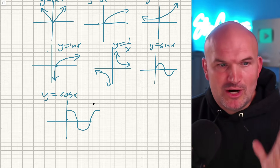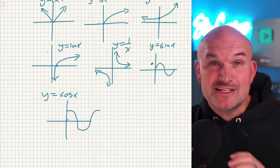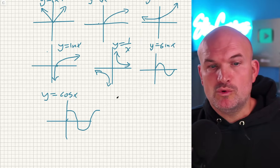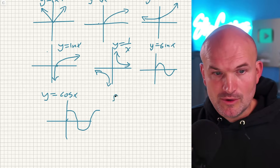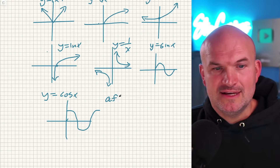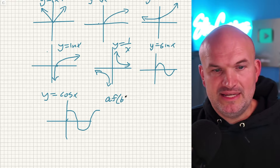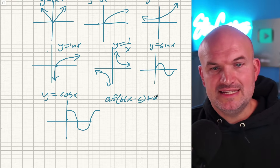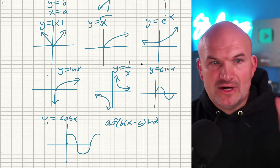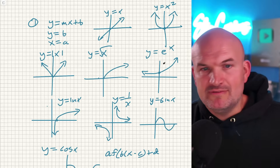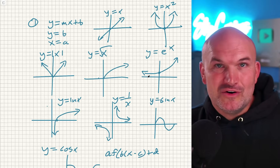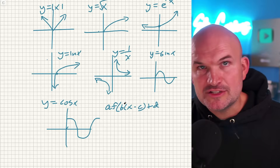Understand what the transformations are going to look like. If I have a function f of x — remember the general form a times f of b times x minus c, plus d. It doesn't matter what your function is; f of x could be any one of these functions: x, x squared, square root of x, e to the x, natural logarithm of x, absolute value. All of these functions behave the exact same way with transformations.